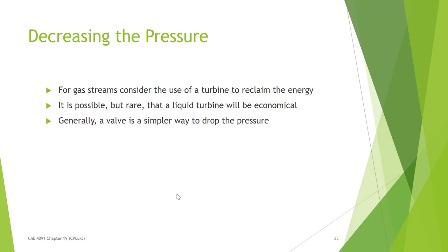When you need to decrease the pressure of a gas stream, look at using a turbine to reclaim the energy. It may not be cost effective — if you're not going to get enough energy reclaimed to justify the cost of the equipment, then just put in a simple valve. There are valve systems for large gas lines as well. For liquids, almost always a valve is going to be the simplest way to drop the pressure. It's possible you might use a liquid turbine to great effect, but generally we just put a valve in the line.